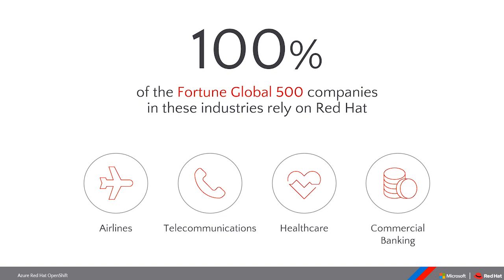I'll talk a bit about why Red Hat is at the table. This slide speaks to our pedigree. We like to roll this stat out quite often: 100% of Fortune 500 and global Fortune 500 leaders are using Red Hat products and services. We're represented in every industry including aviation, telecommunications, healthcare, and banking and financial services. They all choose Red Hat because we have a broad portfolio and a history of delivering business value from open source solutions that meet the needs of the enterprise.